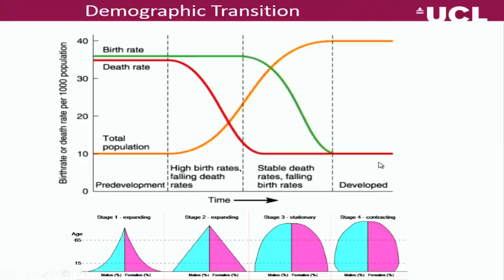This is the situation we've arrived at in developed countries, where the transition first started and took about two and a half centuries to unfold. In other countries where the transition started in the last century, the pace has been much faster, but it's still unfolding today. The timing of events and the lag between the fall in death rate and birth rate varies and depends on external conditions like education and family planning — things which accelerate the fall in birth rate.